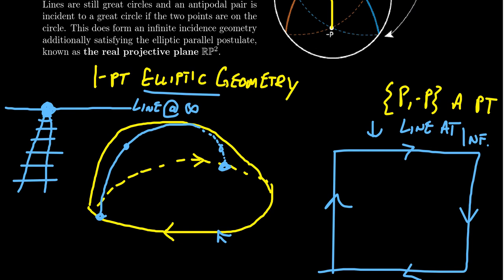Many applications of the projective plane exist here. I want to introduce it as this one-point elliptic geometry. This is in fact an incidence geometry that satisfies the elliptic parallel postulate — a projective geometry was an incidence geometry that satisfies the elliptic parallel postulate and where all lines have at least three points. The lines here have uncountably many points, so this is in fact a projective geometry.